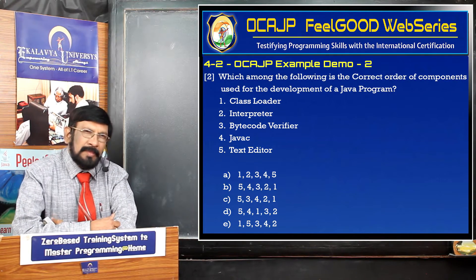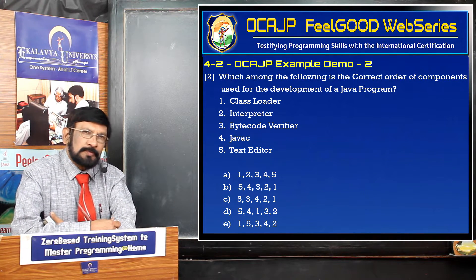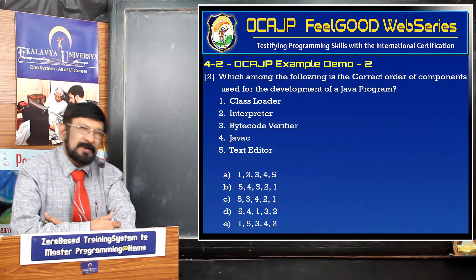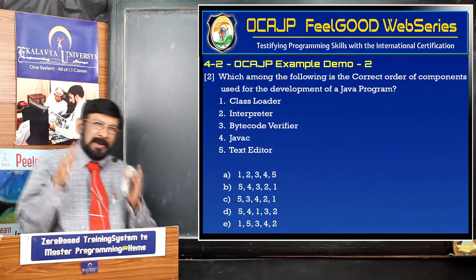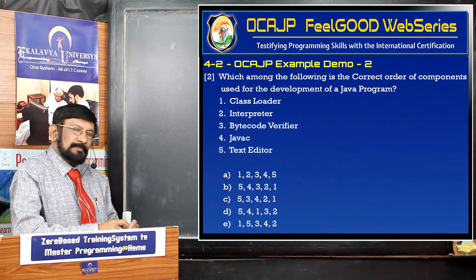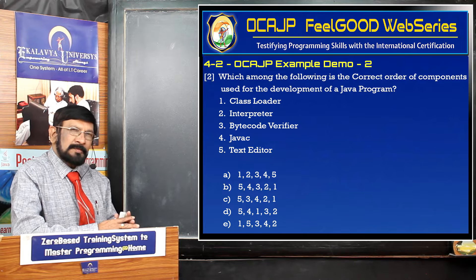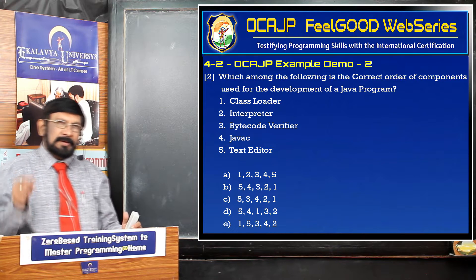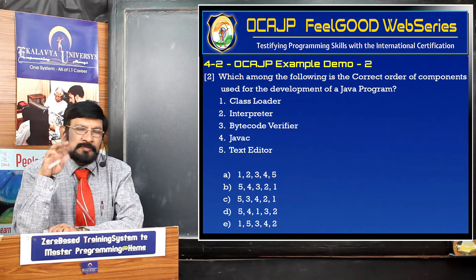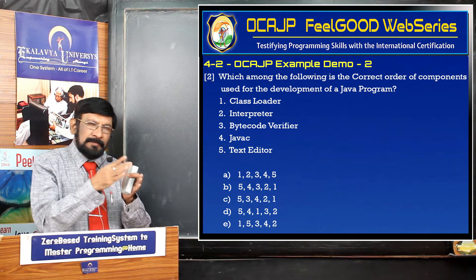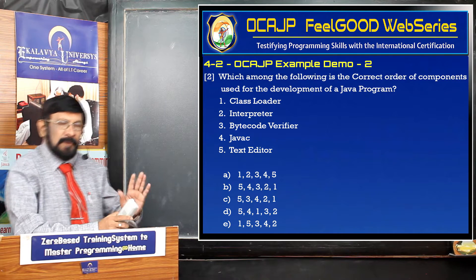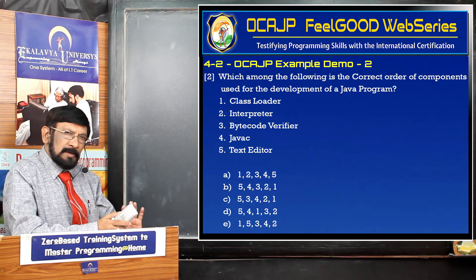Hello friends. Now I show you OCIJP Example Demo 2 - this is a different model. How you are enlightened just to think of these questions. Here five components are given. Actually, in order to develop a Java program, you require all those five components, from the point of typing the program to getting the result. Five components play a vital role.